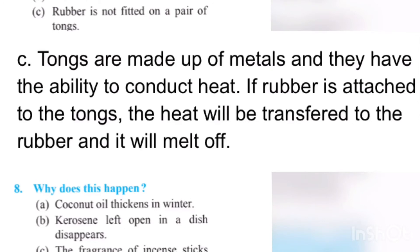Third: Rubber is not fitted on a pair of tongs. Tongs are made of metals and they have the ability to conduct heat. If rubber is attached to the tongs, the heat will be transferred to the rubber and it will melt off.